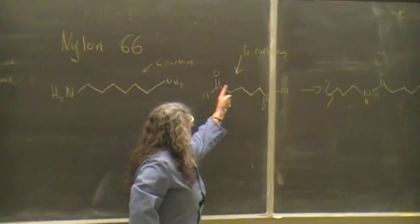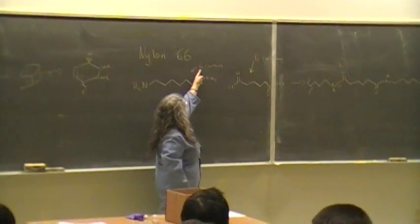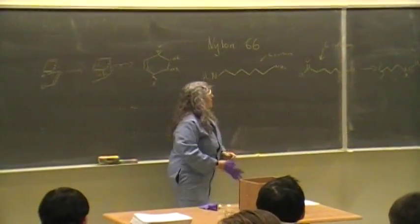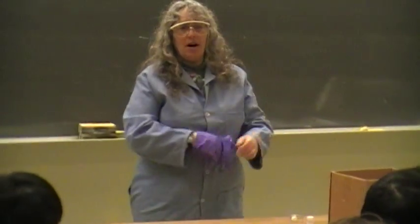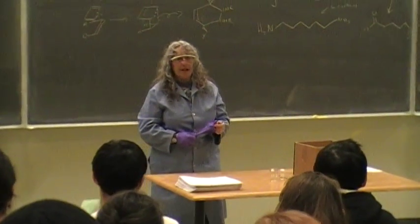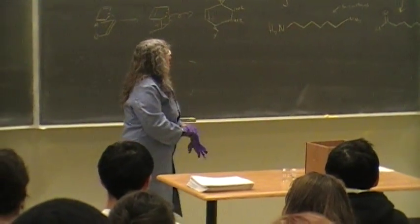So we've got an acid chloride on both ends, and there's six carbons, which is why it's called nylon-66, six carbons for the amine. And what happens is it's what's called a step-growth polymerization, where they all kind of react at the same time, rather than a chain reaction, and they make these long chains as soon as they touch each other.